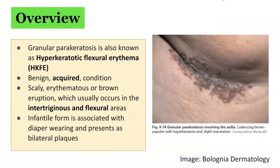Granular parakeratosis is also known as hyperkeratotic flexural erythema or HKFE. It is a benign acquired condition that is very pruritic and can present with maceration in the flexural areas, particularly in the axillae. It is characterized by scaly, erythematous, and brown eruptions, which usually occur in the intertriginous and flexural areas. There is also an infantile form associated with diaper wearing, presenting with bilateral plaques in the flexural groin folds.